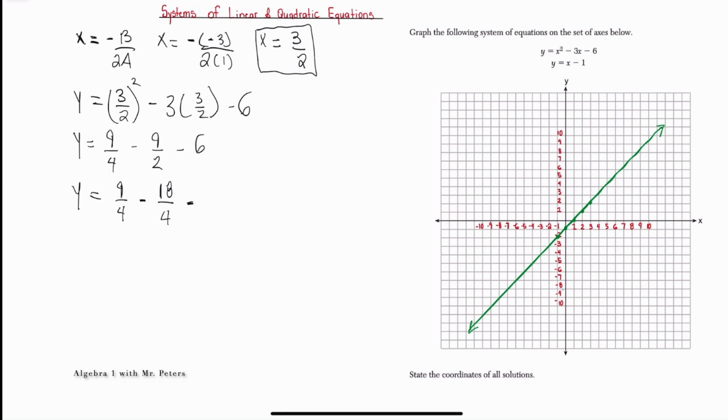So 9 over 2 turns into 18 over 4, and negative 6, when we convert it into a fraction with a similar denominator, will be 24 over 4. We simplify by subtracting to get negative 33 over 4. So our vertex for the parabola is going to be at positive 3 over 2, negative 33 over 4.